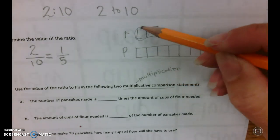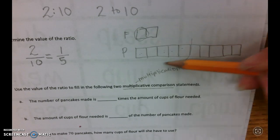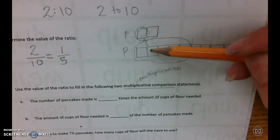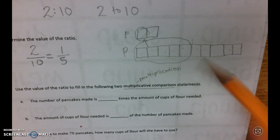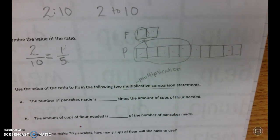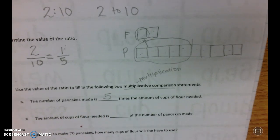When I see it, I can see that I can break this into one cup of flour for every five pancakes, and here's one group of flour for every five pancakes, which is the same as our value right here. So that tells me the number of pancakes made is five times the amount of cups of flour needed.